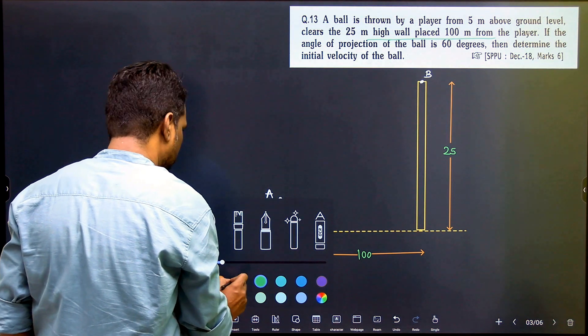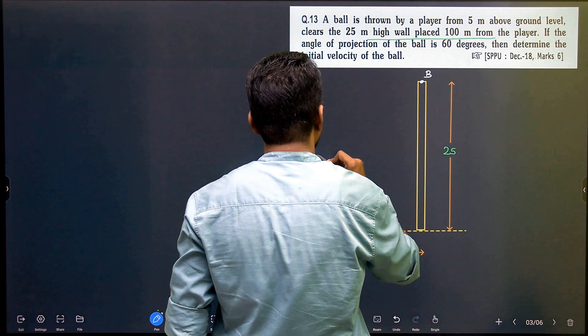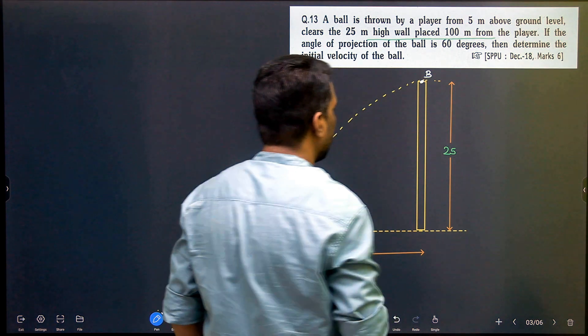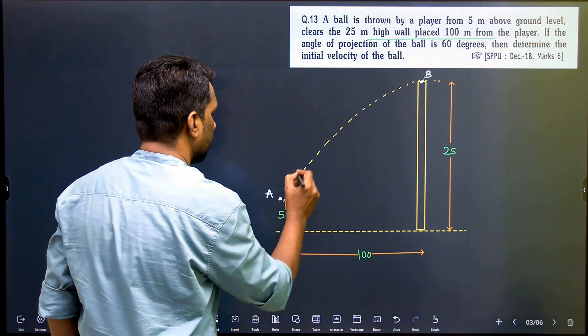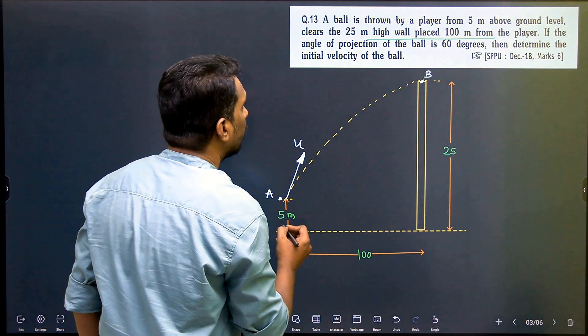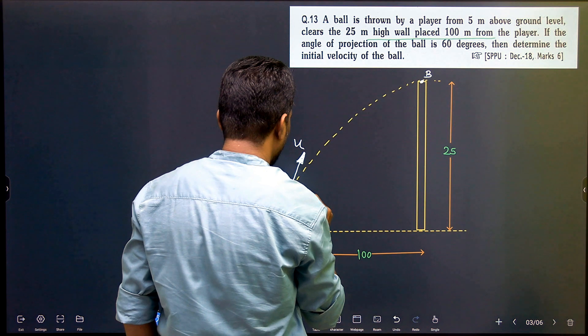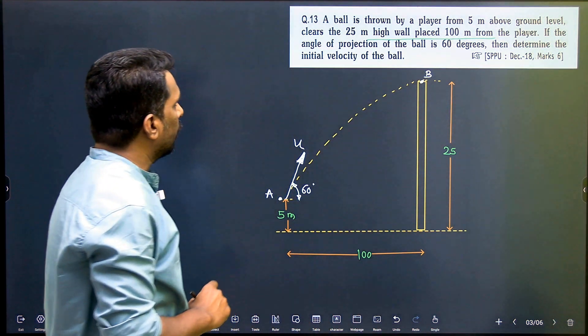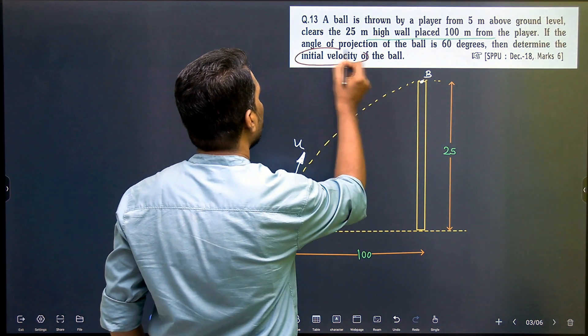Here we have to show the ball and it clears this B point. We will show the initial velocity, this is U. Its angle is 60 degrees. The velocity with which it is projected is 60 degrees with the horizontal. We have to find the initial velocity, that is U.